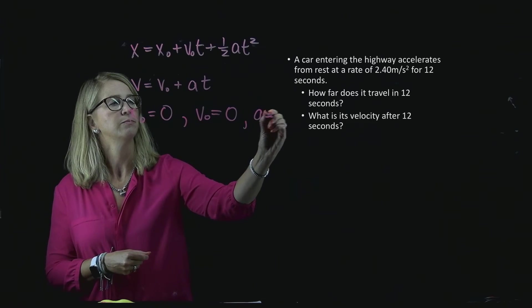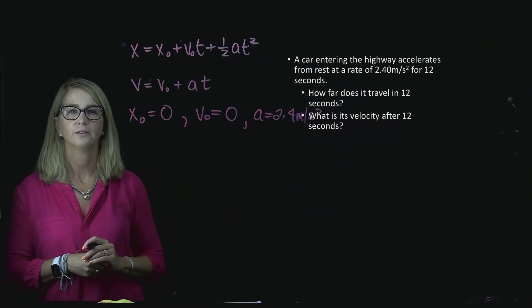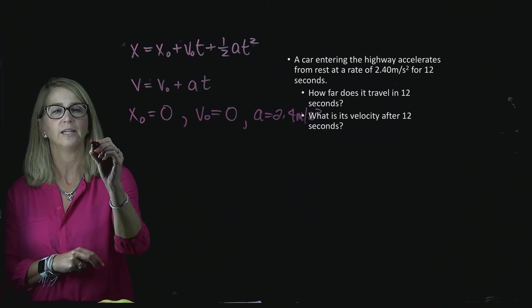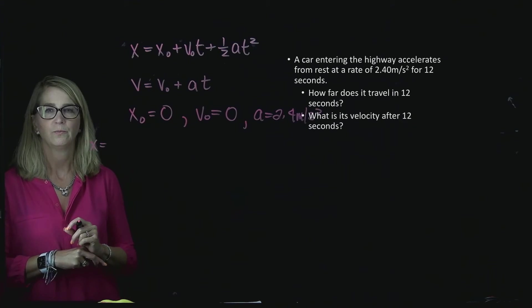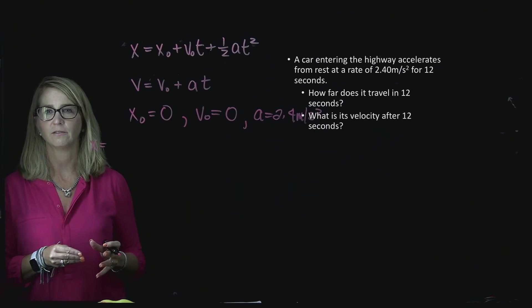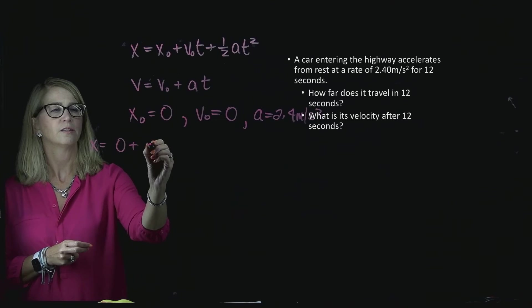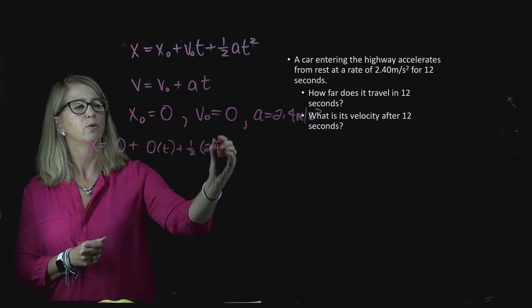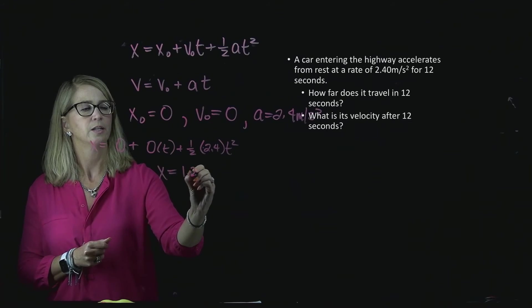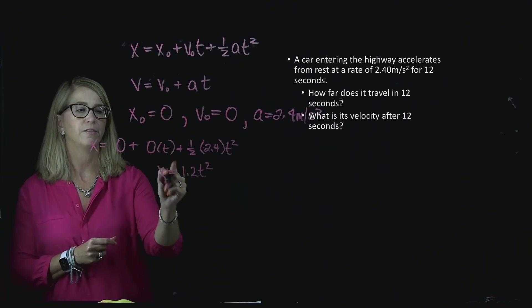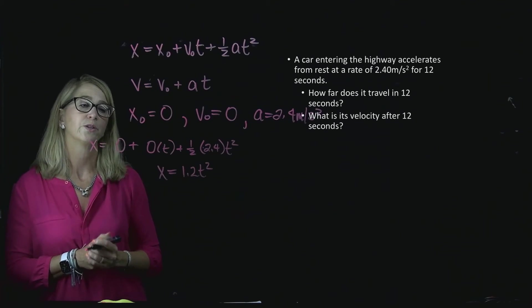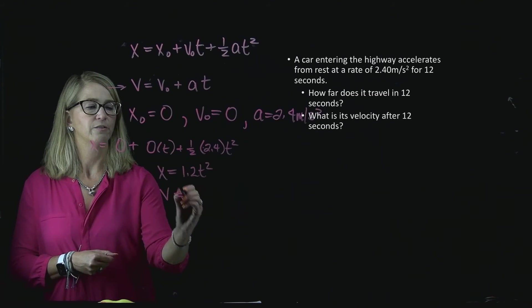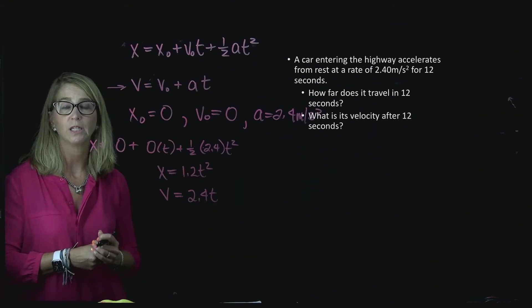And finally, it says that it's accelerating at a rate of 2.4 meters per second squared. That's the acceleration. So now I can write my expressions for this particular problem pretty easily. x is equal to x naught, which is zero, so I'm not going to even write the zero down. Well, I could write it down for now to help us out. Plus v naught t, well, the initial velocity is zero, plus 1 half the 2.4 times the t squared. So, more simply, I could write this as 1.2 times t squared. Now, this is the expression that really applies to our particular problem. Similarly, if I look at the velocity expression and think about my initial velocity and my acceleration, I could find that the velocity can be written as 2.4 times t, because my v naught is zero.